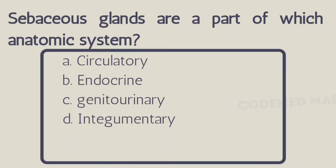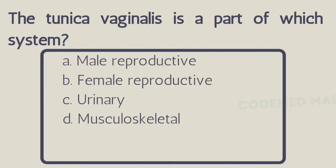Next question: sebaceous glands are a part of which anatomic system? Option A: circulatory, Option B: endocrine, Option C: genitourinary, Option D: integumentary. The right answer is integumentary system. Sebaceous glands are part of the body's integumentary system and they protect the body against microorganisms.